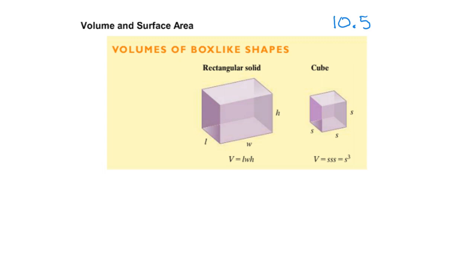Let's talk about volume. What we're looking at is the amount of space that a substance occupies. For instance, this shape of a rectangular solid — the volume of it is how much will be occupied on the inside or the interior of this rectangular solid. It could be filled with a solid mass, liquid, or perhaps gas. Let's look at the formula.